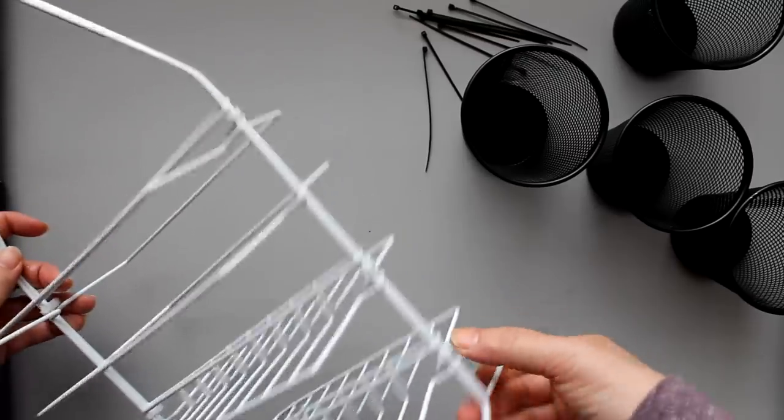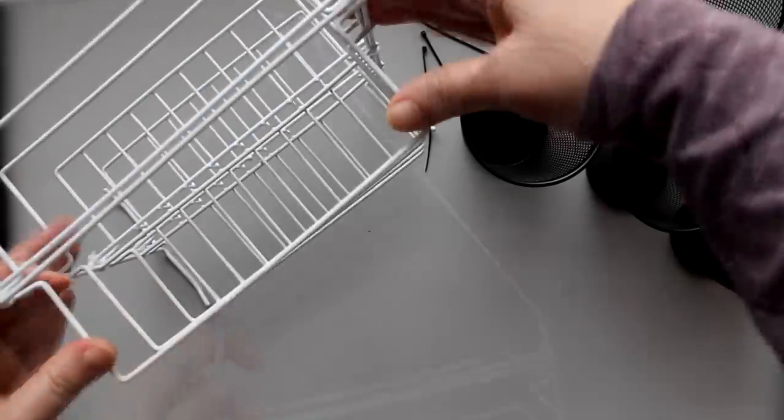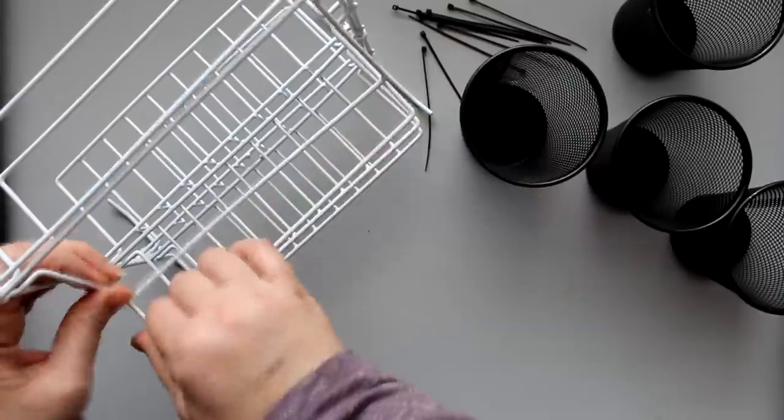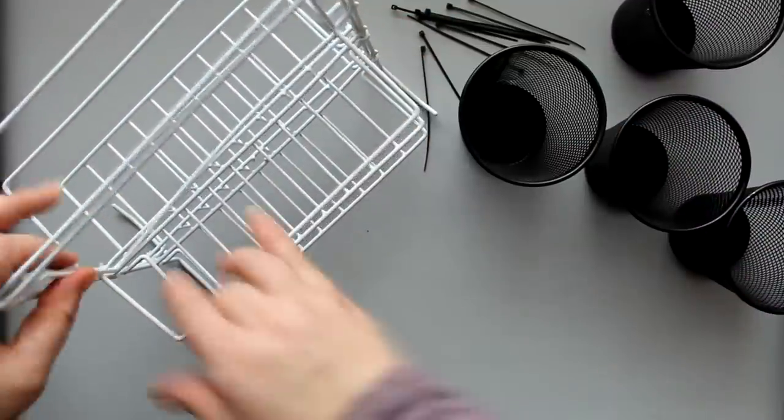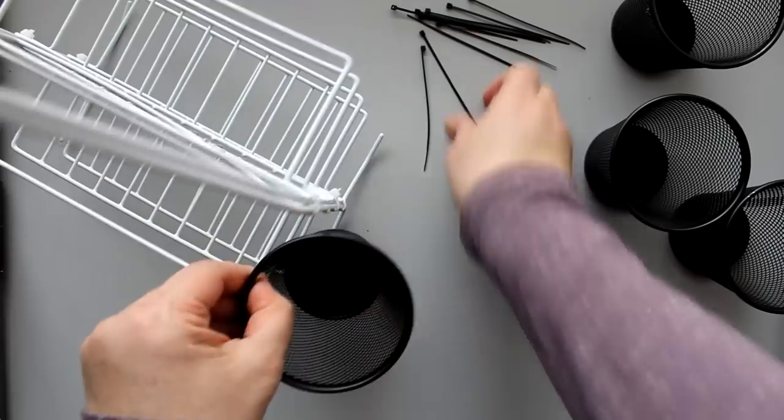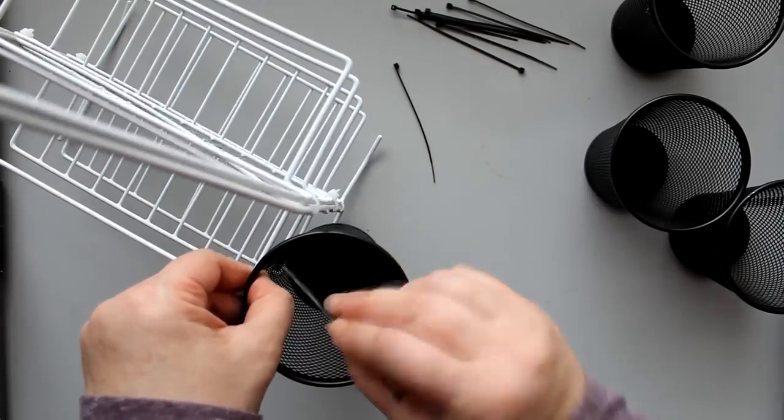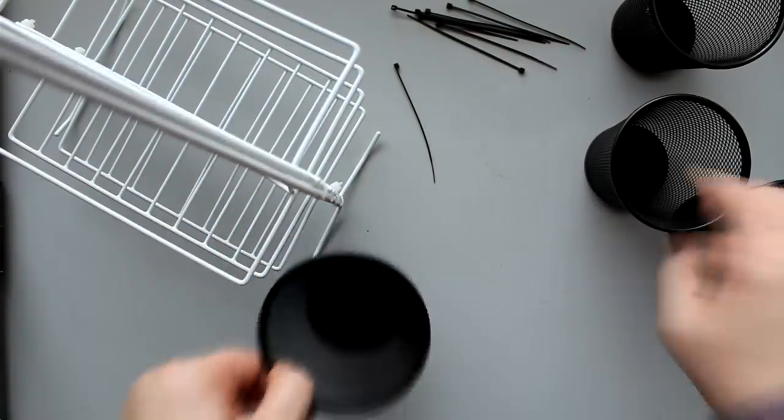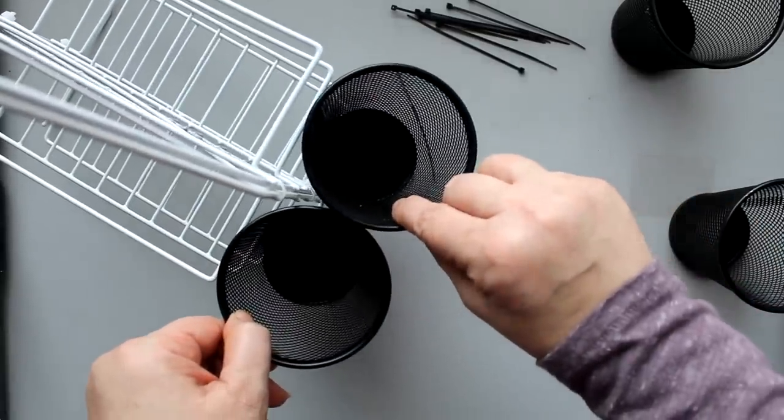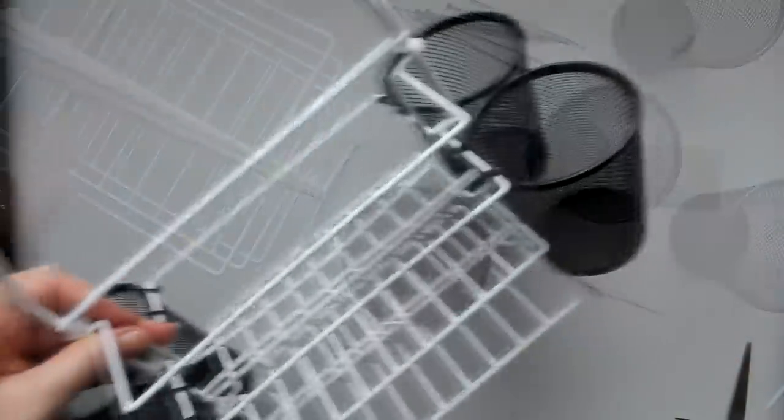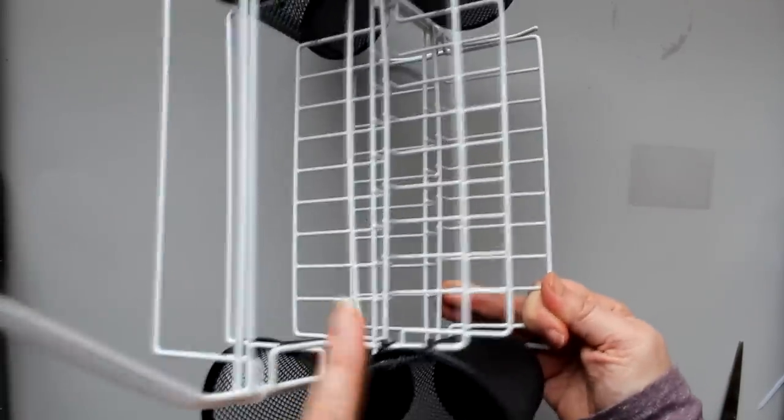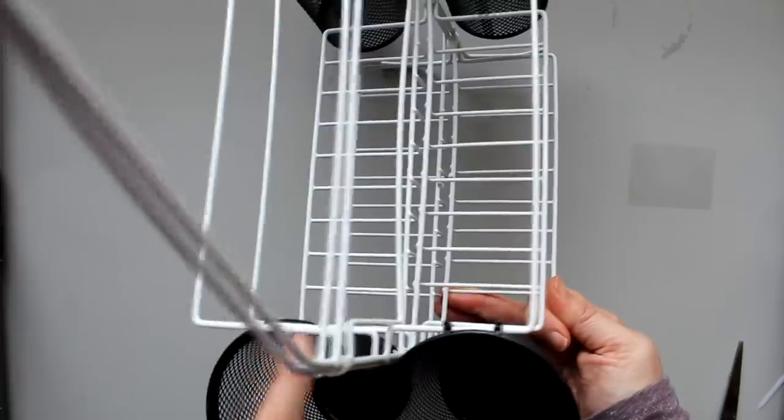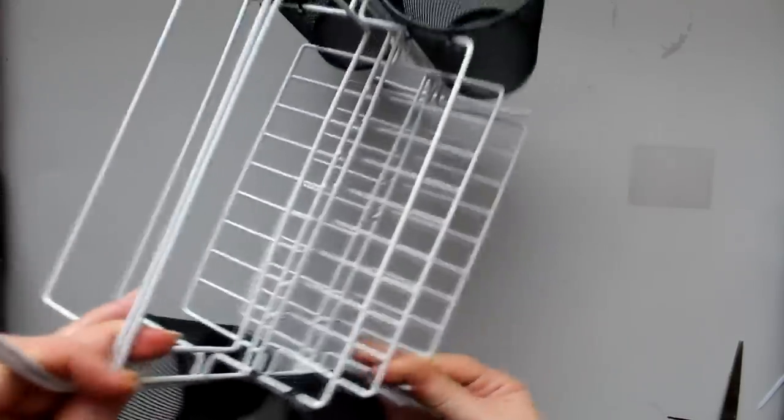To make, I just took two of the caddies and zip tied them back to back. On one side I folded down the top rung to better accommodate the plates. Then I took four of these mesh pencil holders from the dollar tree and zip tied them to the sides of the caddy using these small zip ties that I got also from dollar tree. Also I wanted to point out that when I attach the cups I am attaching them to the second rung on the caddy. That's because on the one side I did fold down the first rung, so just be aware of that as you are attaching them.